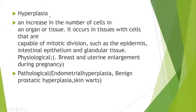Now let's move on to hyperplasia. Hyperplasia is an increase in the number of cells in an organ or tissue. It occurs in tissues with cells capable of mitotic divisions, such as the epidermis, intestinal epithelium and glandular tissue. The types include physiological, seen in the breast and uterus during pregnancy, and pathological, such as endometrial hyperplasia, benign prostatic hyperplasia, and hyperplasia seen in skin warts.